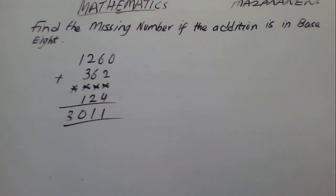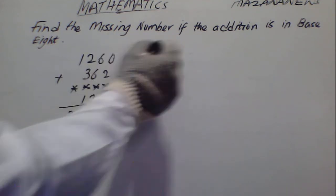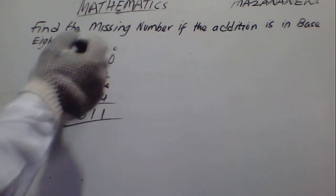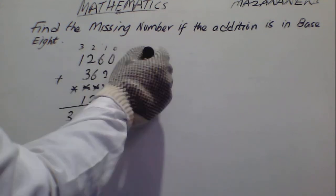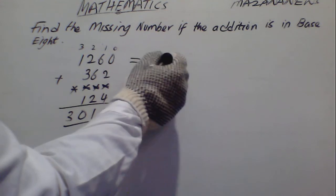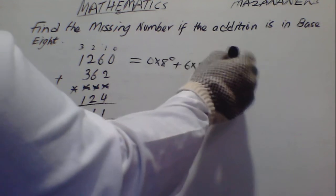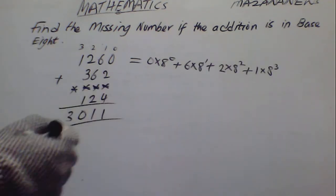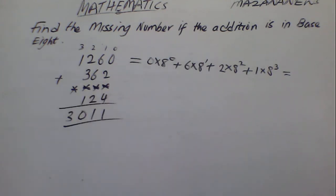After which I return the answer to base 8. So first let us convert to base 10. We assign position values: here is 0, here is 1, here is 2, here is 3 — those are the multiplication powers. So in base 8 we have: 0 times 8 raised to power 0, plus 6 times 8 raised to power 1, plus 2 times 8 raised to power 2, plus 1 times 8 raised to power 3. So 6 times 8 gives us 48.